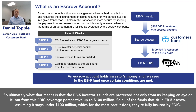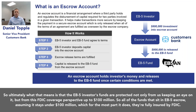Ultimately what that means is that the EB-5 investors' funds are protected not only from us keeping an eye on it, but from an FDIC coverage perspective — up to $100 million. So all of the funds that sit in EB-5 escrow, assuming it stays under $100 million, which for the most part it does, they're fully insured by FDIC.